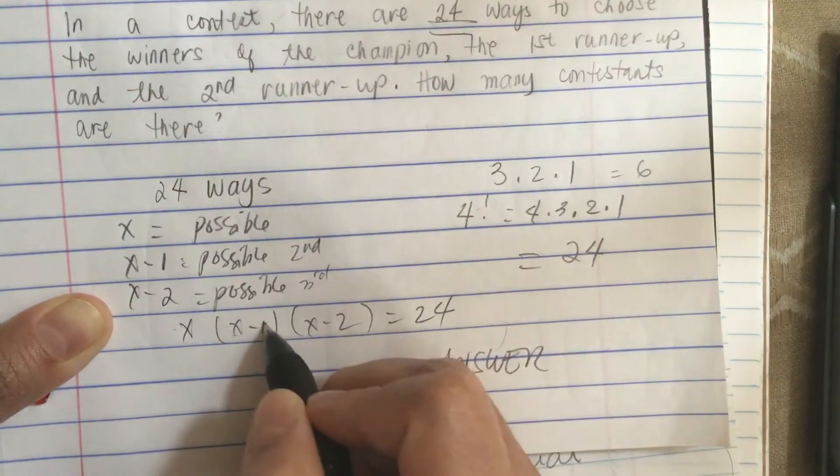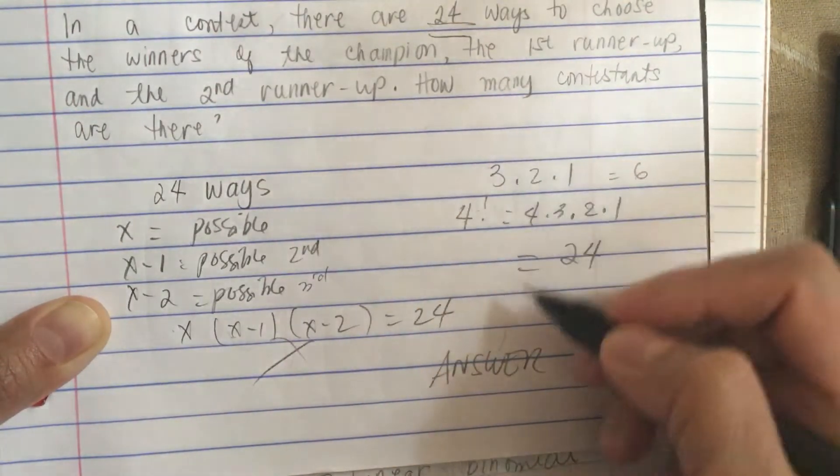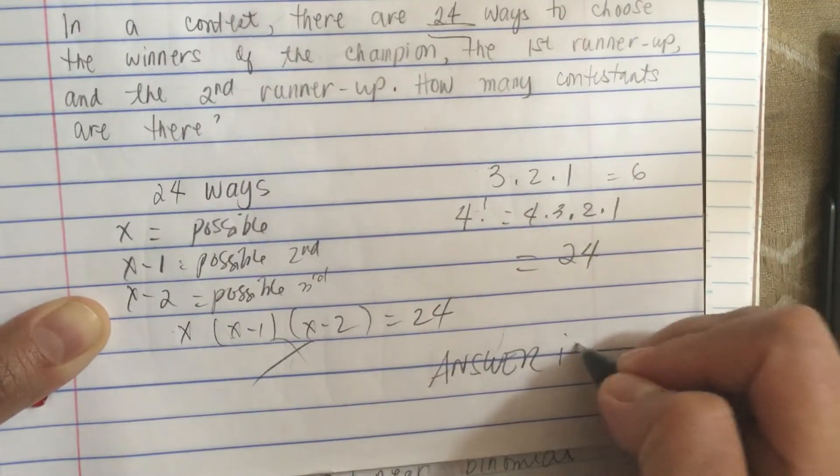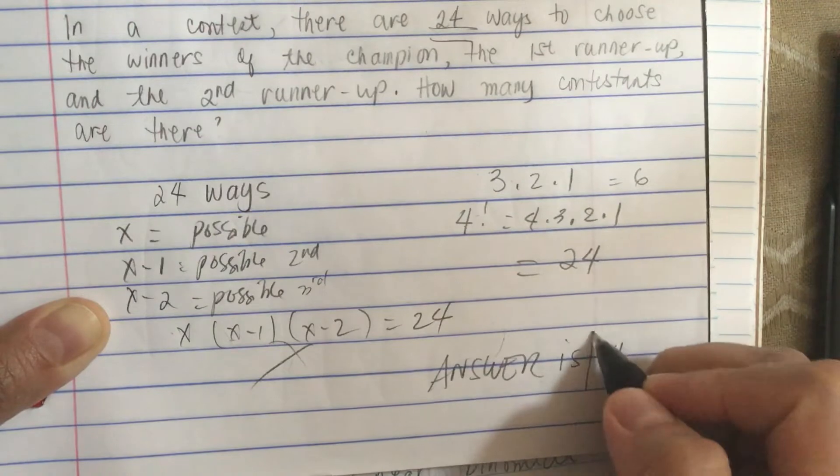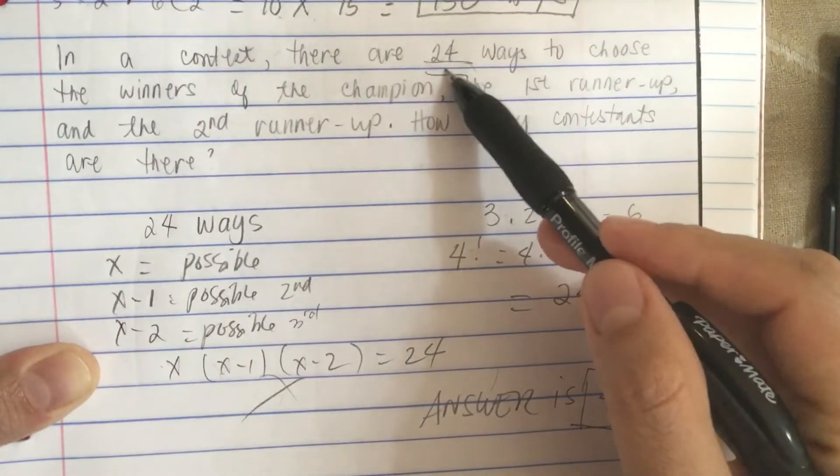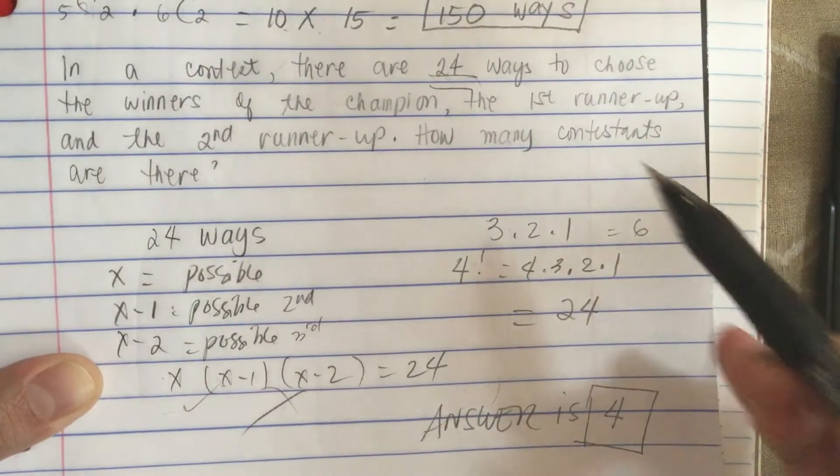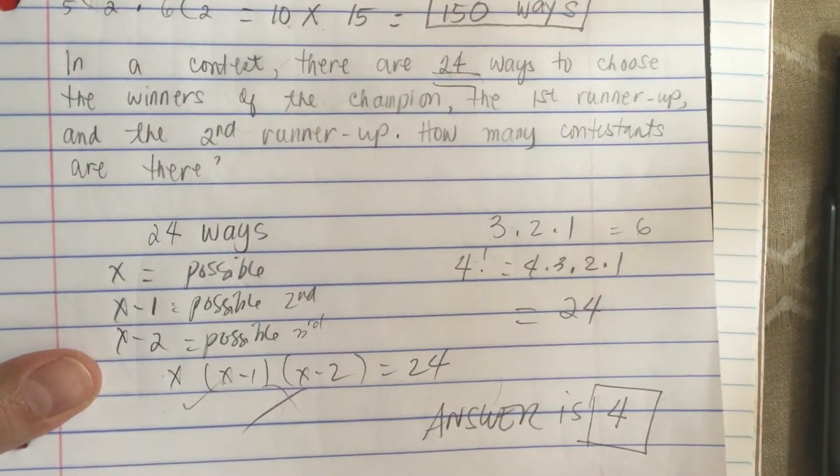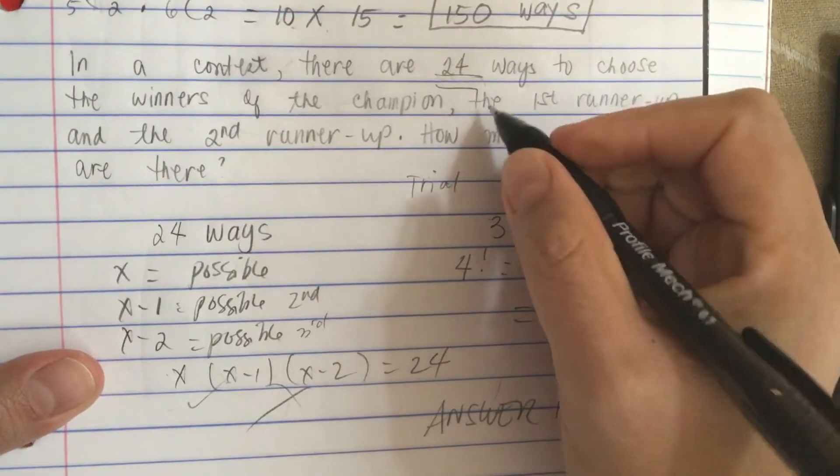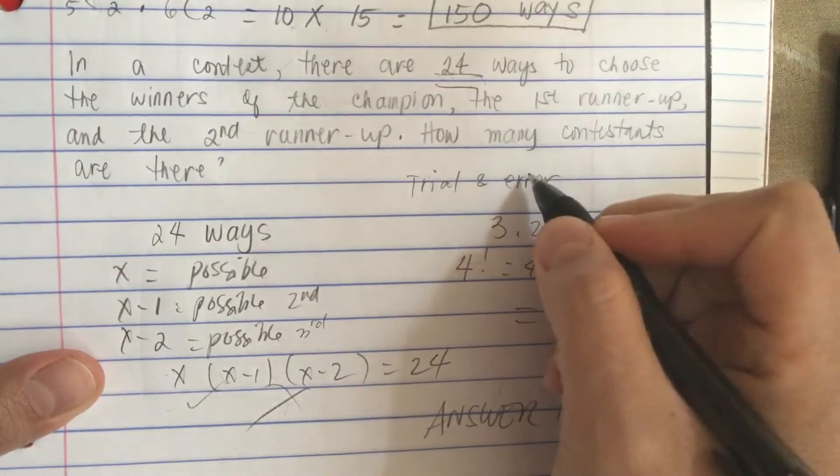So we don't do it this way because it's better to just guess, that's it, trial and error. Since this is just a small number, but if this is a big number then we have to do it this way. So this is a trial and error problem.